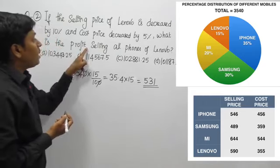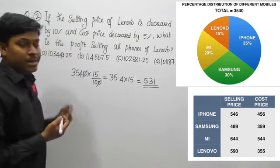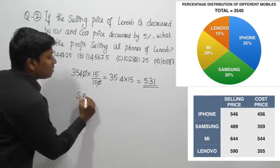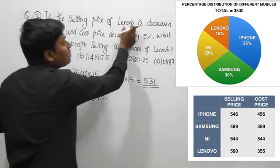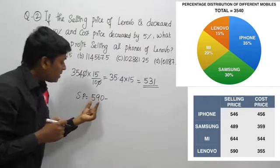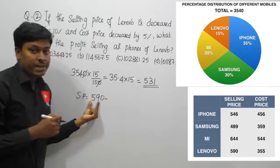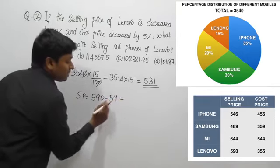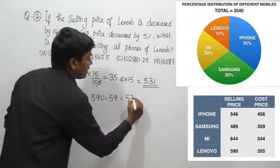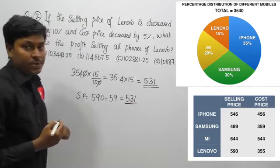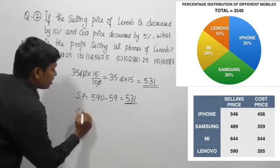Our target is to find the profit earned after the given conditions. The selling price of Lenovo is 590, and it is decreased by 10 percentage. 10 percentage of 590 is 59. So subtracting: 590 − 59 = 531. The new selling price of Lenovo is 531.